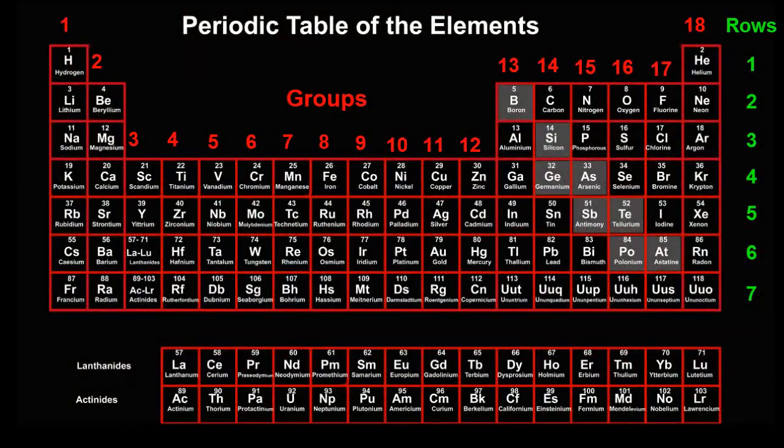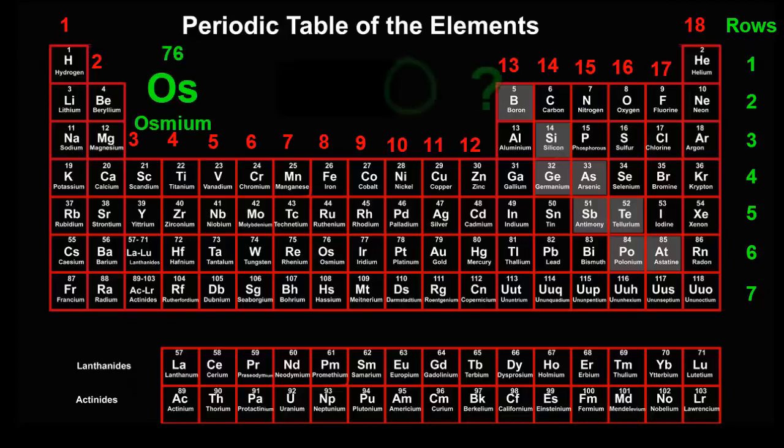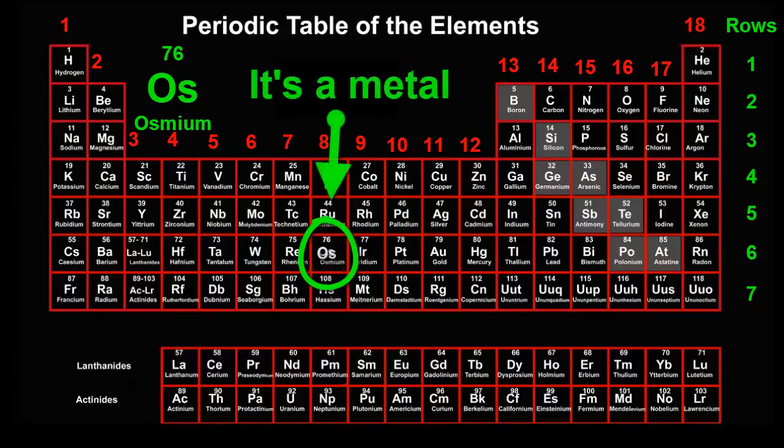Let's use the periodic table to predict whether an element would be a metal or a non-metal. How about osmium, atomic number 76? Osmium is to the left of the diagonal grey band, so it should be a metal.